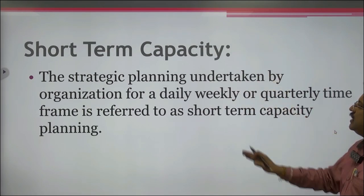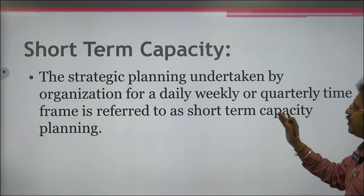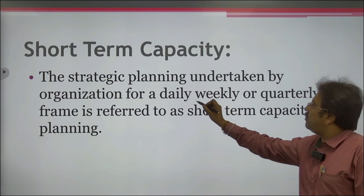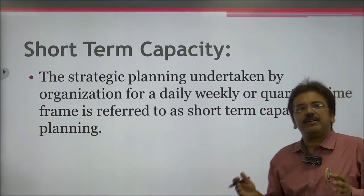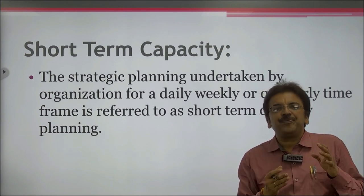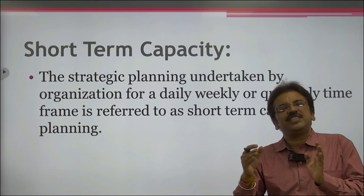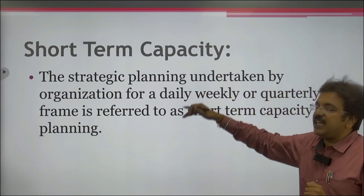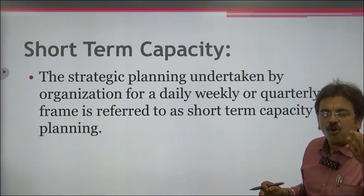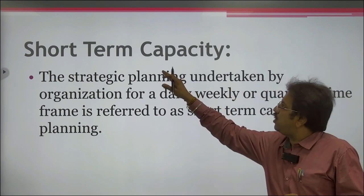Short-term capacity planning refers to strategic planning undertaken by an organization for a daily, weekly, or quarterly time frame. This includes planning for each day, each of the 52 or 53 weeks in a year, each month, or quarterly periods. All planning done within these time frames falls under short-term capacity planning.